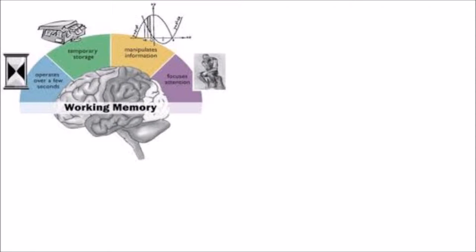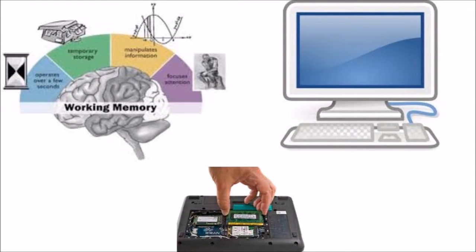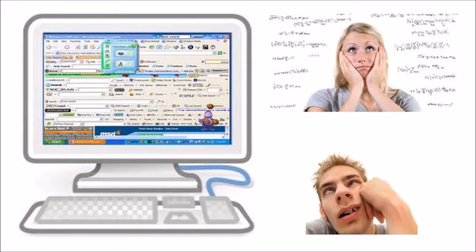If you have taken a basic psychology course, you might be familiar with the concept of working memory. If not, a good analogy is to look at the human brain as a computer, with working memory acting as RAM or random access memory. If you have too many windows open or too many programs running, the computer will run slowly, or if it's like mine, it'll just crash and you'll get the blue screen of death.